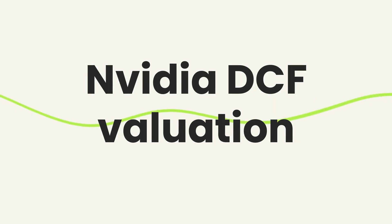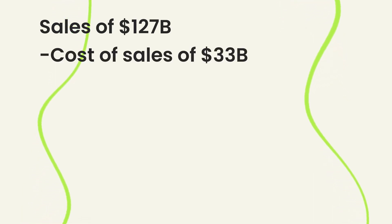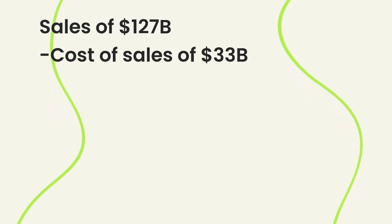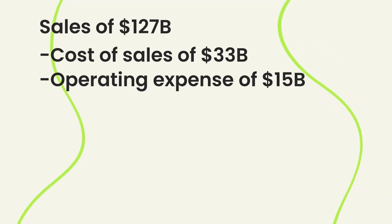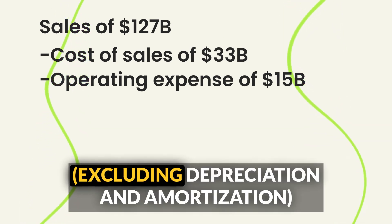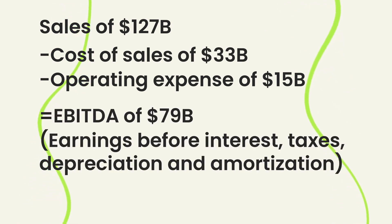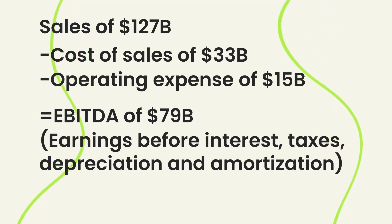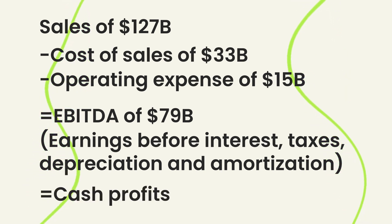For example, looking at NVIDIA with real numbers: NVIDIA this year is probably going to generate about $127 billion in sales. There's $33 billion in cost of sales — the costs of producing the chips — and $15 billion in operating expenses like sales, marketing, and research, excluding depreciation and amortization. That gets us to about $79 billion in EBITDA, or earnings before interest, taxes, depreciation, and amortization — a measure of the cash profits of the business.